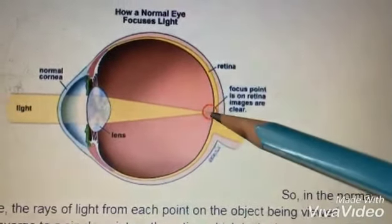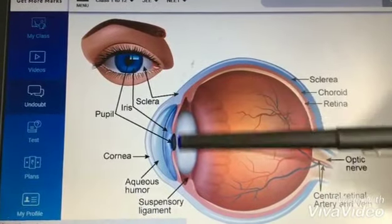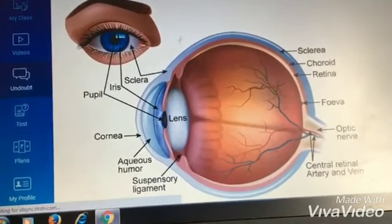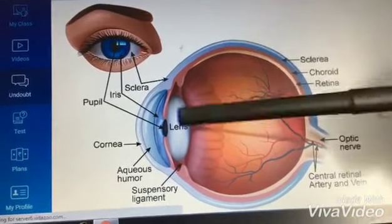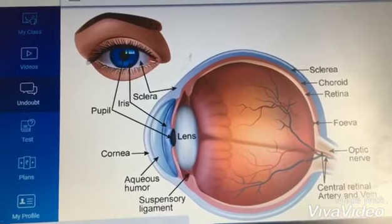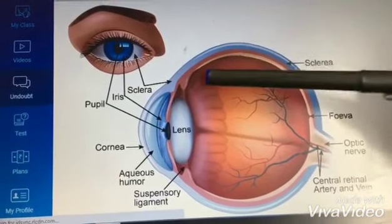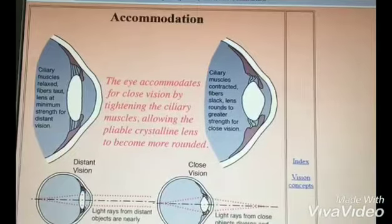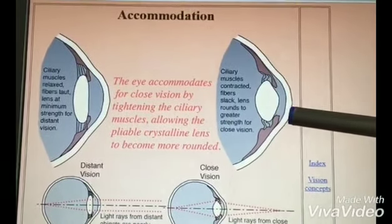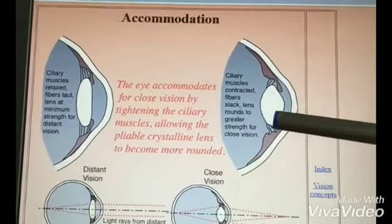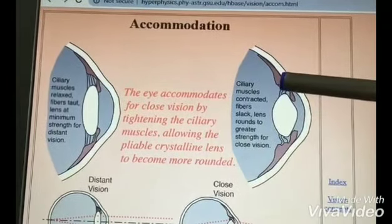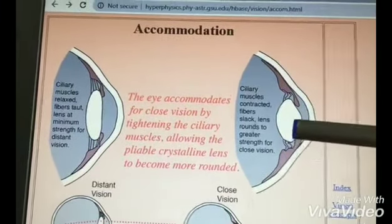Next are the ciliary muscles. The ciliary muscles help the lens. When you are viewing a nearby object, the ciliary muscles contract and the wire-like suspensory ligaments become loose, which changes the shape of the lens.